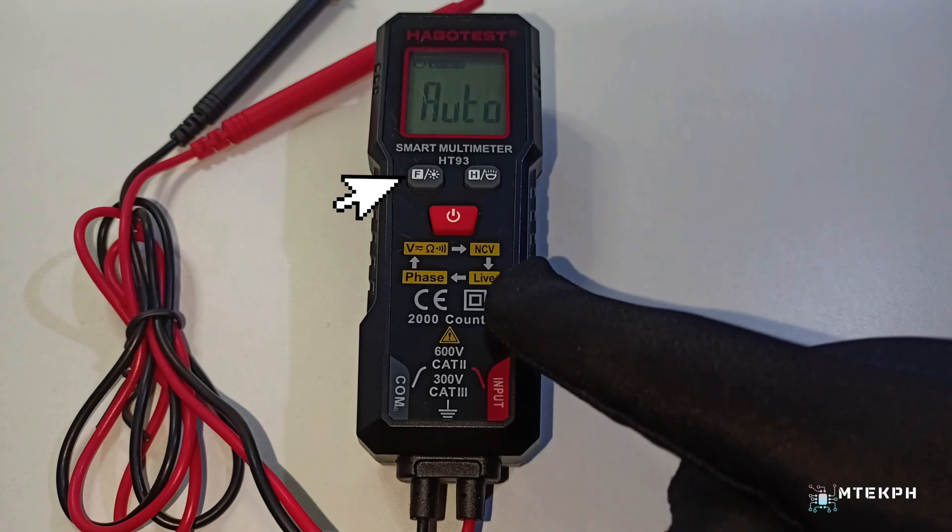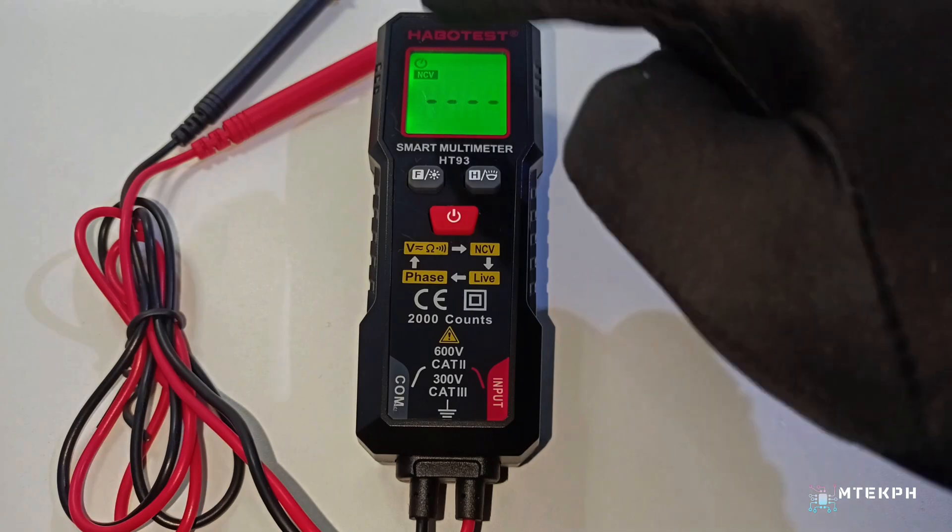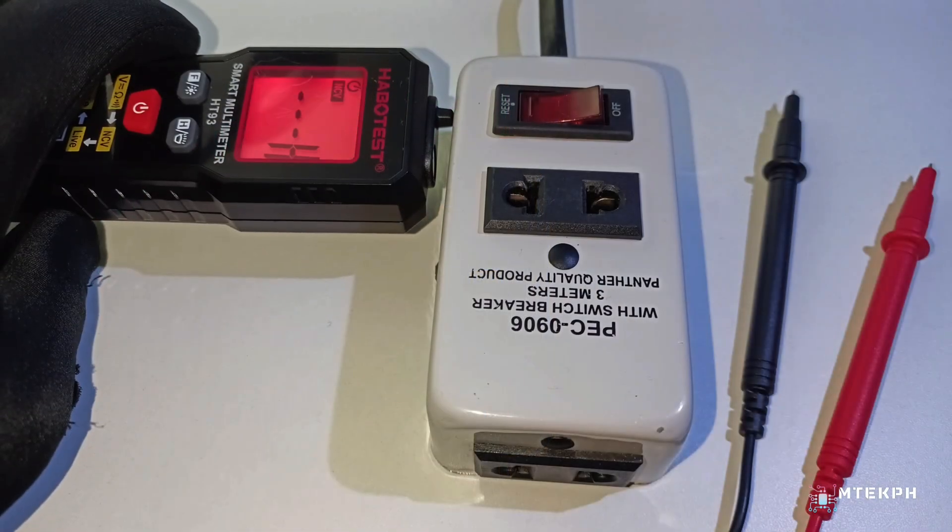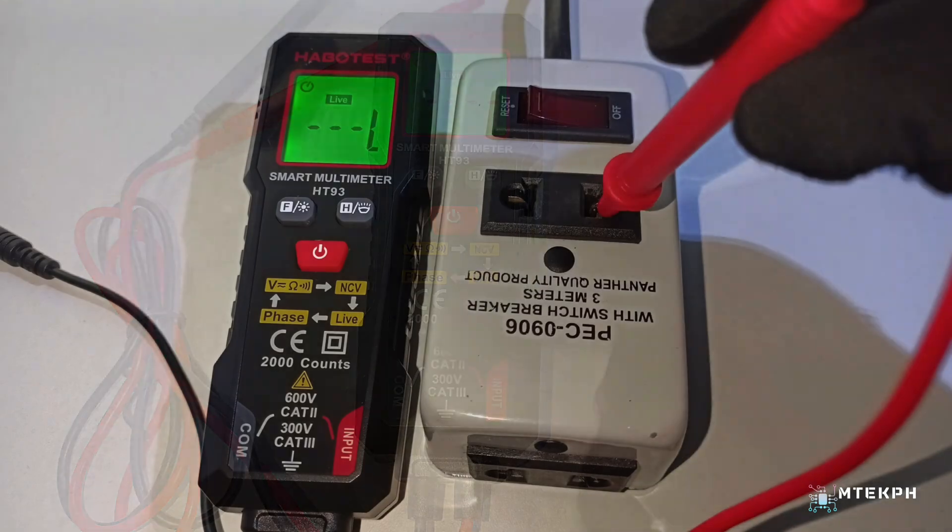It's got a function and backlight button on it. Just hold down to light up the LCD screen. Press again when testing NCV, non-contact voltage, and switch to live mode to test live current using the red probe to see if it's live or neutral.